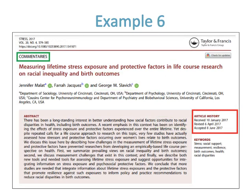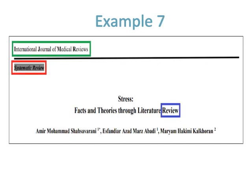In Example 6, the word commentaries is written, which refers to short articles covering a contemporary issue relevant to the journal's scope. The commentaries is bordered with green color and the article history is bordered with red color. It is a review article because there is no sample size nor questionnaires used to investigate by measuring lifetime stress exposure and protective factors in life course research on racial inequality and birth outcomes. In Example 7, the journal name International Journal of Medical Reviews clearly signifies that it is a review article, because systematic review is a kind of review with a higher level of evidence due to rigorous methodology.